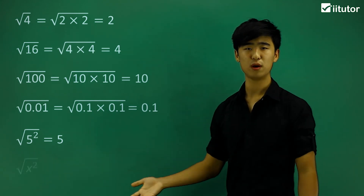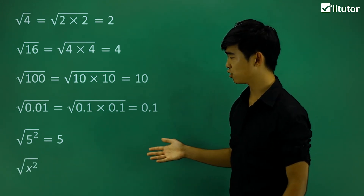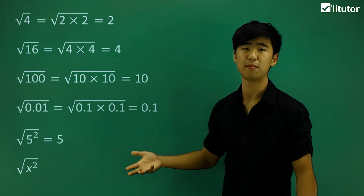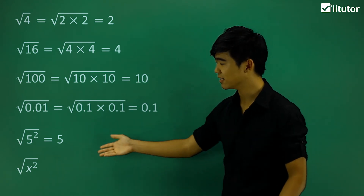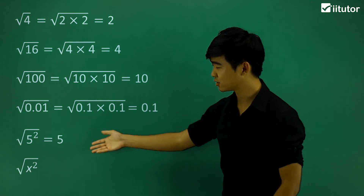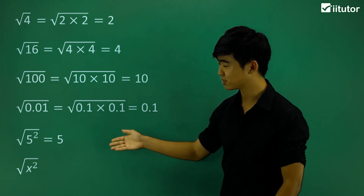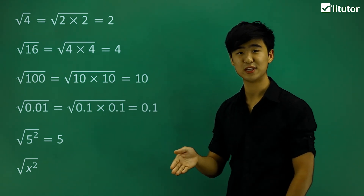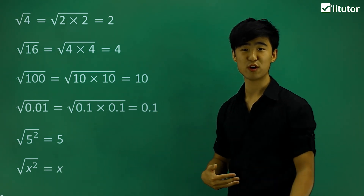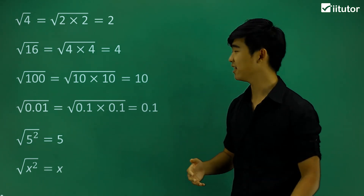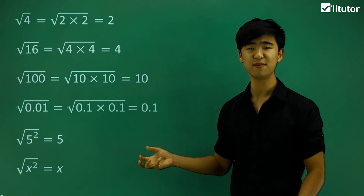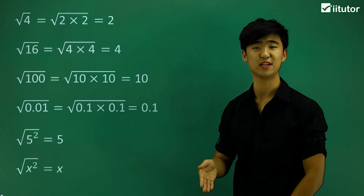Now if we have a look at one more example, we have the square root of x squared. Say x is some number that we don't know, but we're given x squared. Again, square root and a square — we can cancel out, and we're left with just x. So this is how square roots work when we're dealing with square numbers inside: it's very easy to just cancel out.